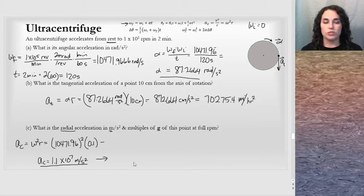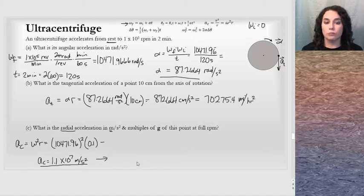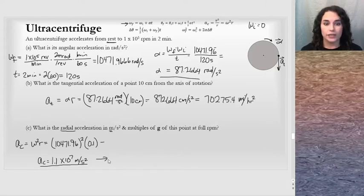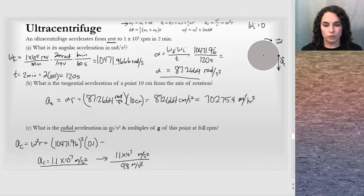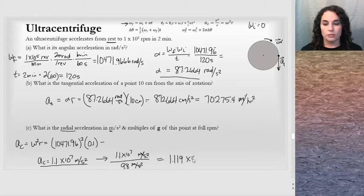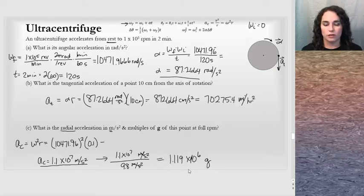To convert to multiples of g — as seen in discussions of space flight — I divide by 9.8 m/s². Dividing 1.1×10⁷ by 9.8 gives 1.119×10⁶ G's. The units cancel and we're left with a number of G's. That's an enormous number — it would likely destroy a human brain — but it is an ultracentrifuge.